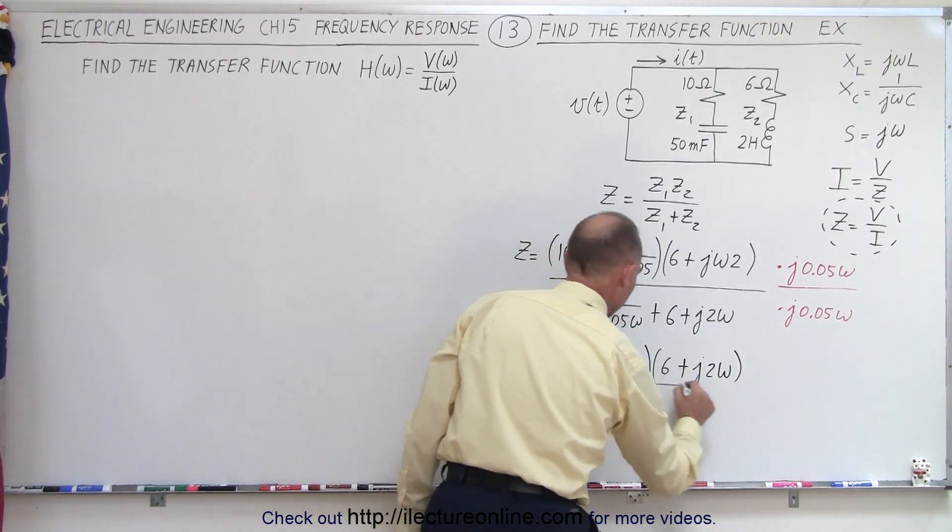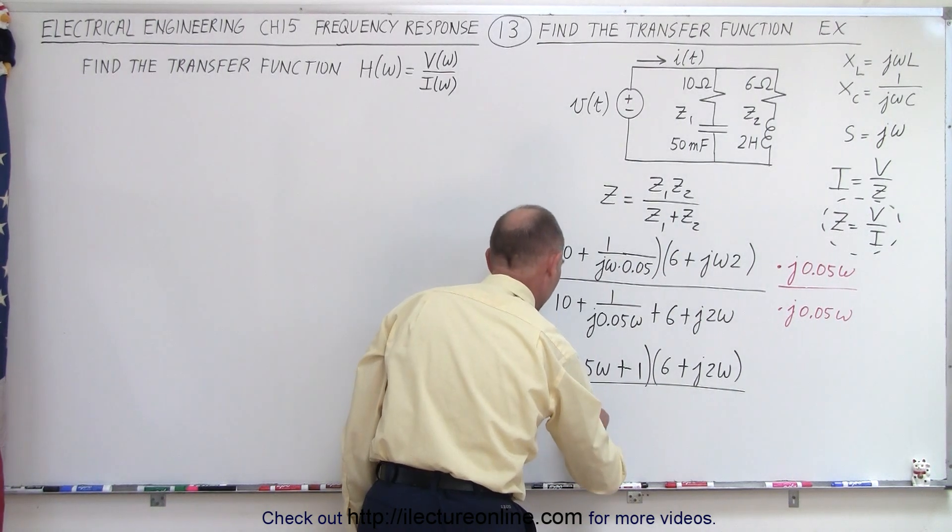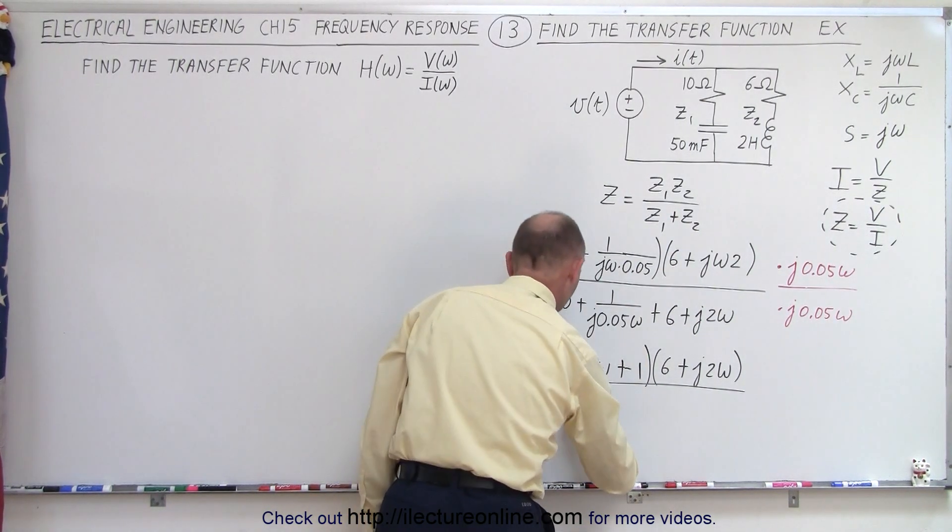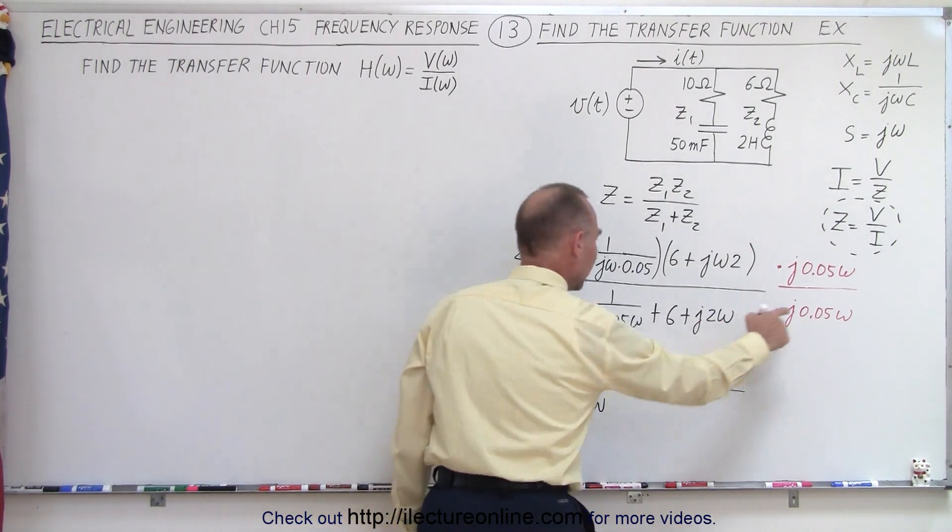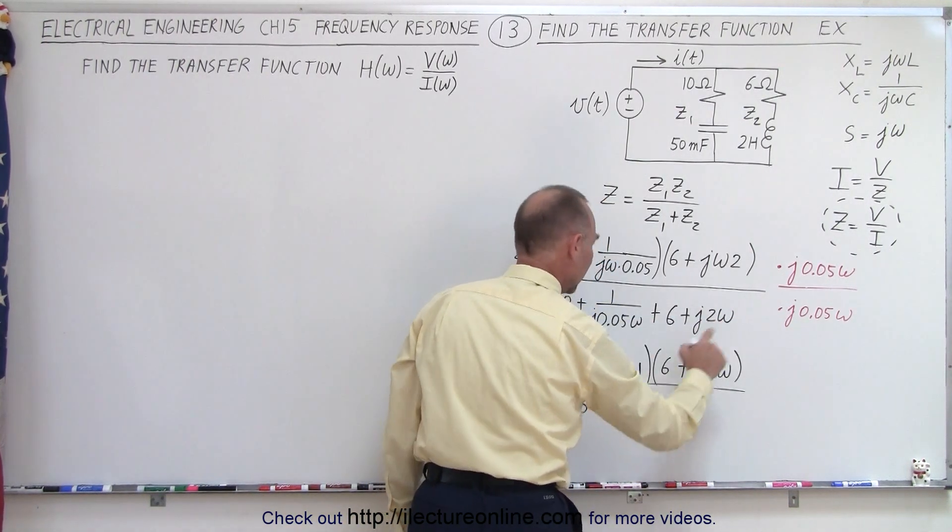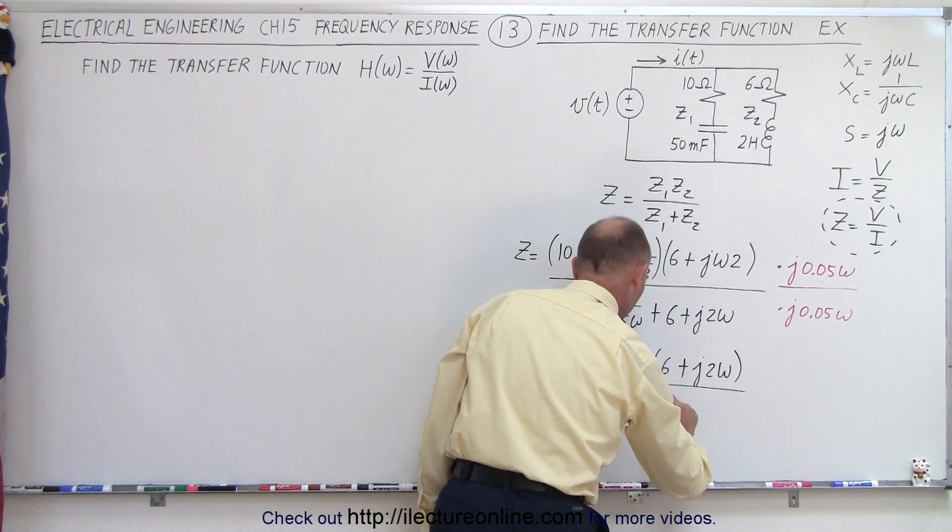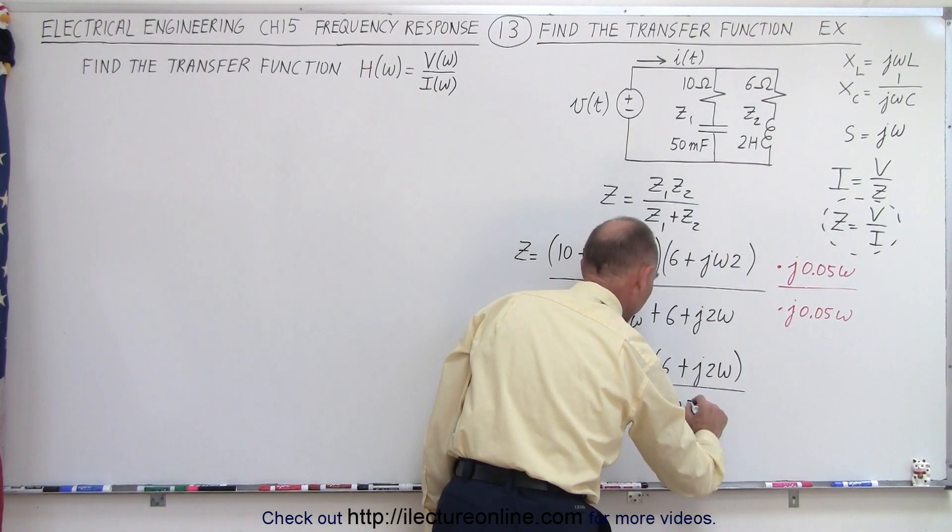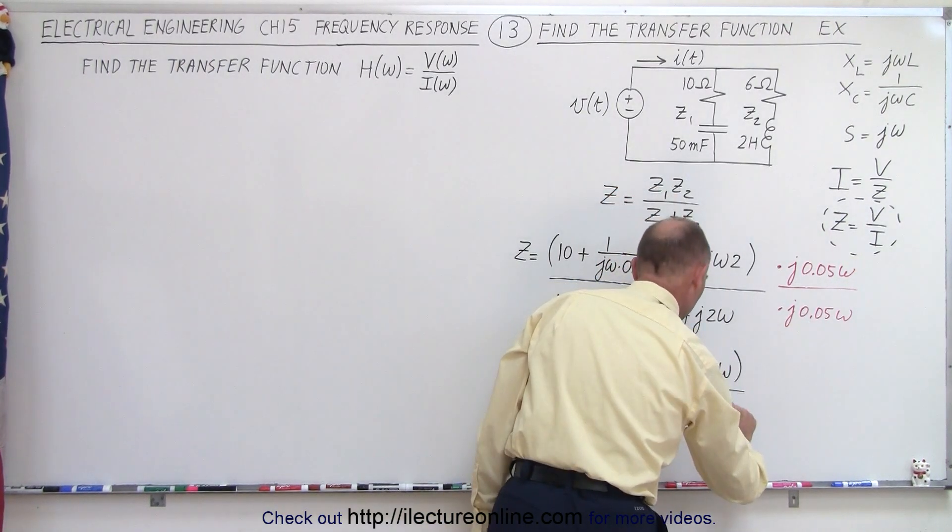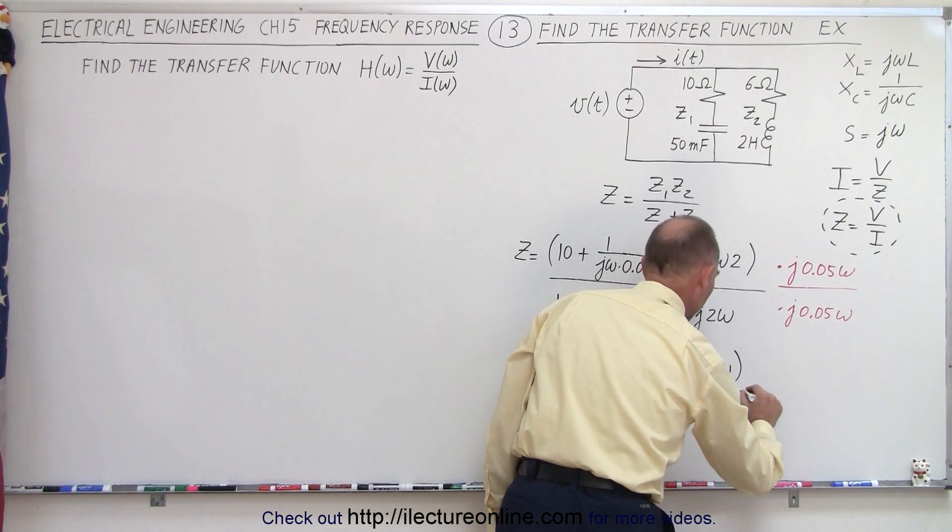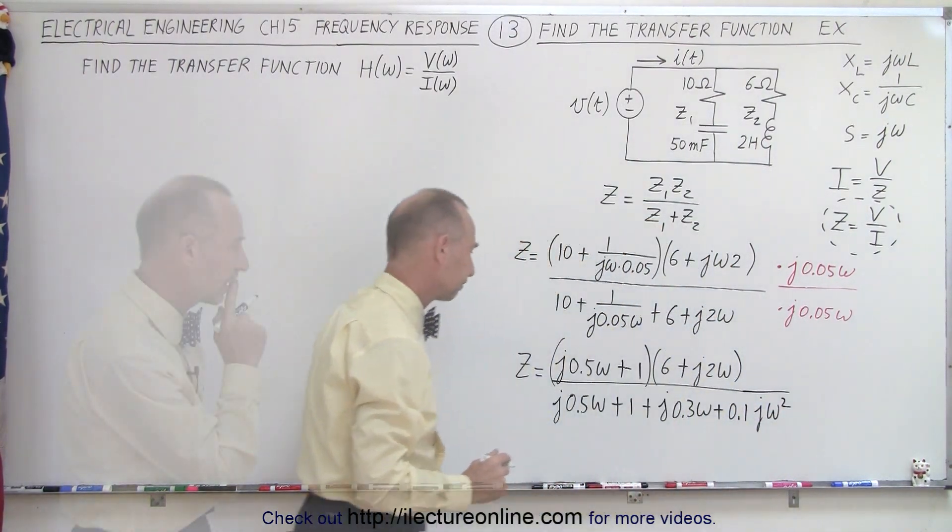And then I'll multiply this times what I have left here, which is 6 plus J 2 omega. In the denominator, I'm going to multiply this times every one of the terms. So, here I get J times 0.5 omega. This times this, I get plus 1. That times this, I get plus J times 0.3 omega. And this times this, I get 2 times that. That would be plus 0.1, and I'm going to write it as J squared omega squared.